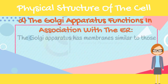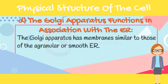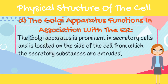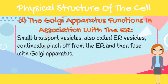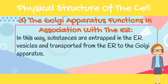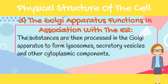The Golgi apparatus functions in association with the endoplasmic reticulum. The Golgi apparatus has membranes similar to those of the agranular or smooth endoplasmic reticulum. It is prominent in secretory cells and is located on the side of the cell from which secretory substances are extruded. Small transport vesicles, also called endoplasmic reticulum vesicles, continually pinch off from the endoplasmic reticulum and fuse with the Golgi apparatus, transporting substances from the ER to the Golgi apparatus, where they are processed to form lysosomes, secretory vesicles, and other cytoplasmic components.